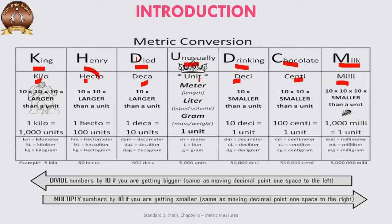King stands for Kilo, Henry stands for Hecto, Died stands for Deca, Unusually or Uncertainly stands for Unit, then Drinking stands for Deci, Chocolate stands for Centi, and Milk stands for Mili. King is otherwise the highest authority, so Kilo is the biggest unit — the largest unit — and Mili is the smallest unit.